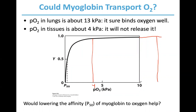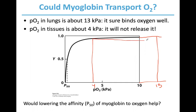4 and 13 kPa are the partial pressures of oxygen in the tissues and lungs respectively. If myoglobin went into the lungs at 13 kPa and then to the tissues at 4 kPa, how much oxygen would be released? Almost none — just a tiny bit. So myoglobin by itself would not be a good delivery system.